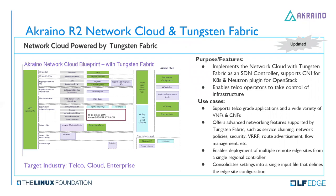The Network Cloud is powered by Tencent Fabric as a single SDN controller — it can support CNI for Kubernetes and Neutron plug-in for OpenStack. Use cases include support for telco-grade applications and a wide variety of VNFs and CNFs. It offers advanced networking features like VRRP, Tencent Fabric service chaining, and enables deployment of multiple remote edge sites from a single regional controller.